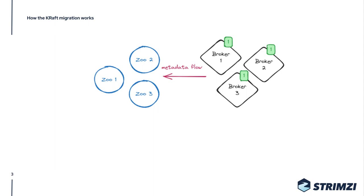This arrow shows that the metadata flow goes from the brokers to ZooKeeper. When we create a topic using the Kafka CLI tool, all the data goes to ZooKeeper to be stored. There is also flow from ZooKeeper to broker, but that is more an internal detail — for example, when there is a broker failover and a controller has to restart, it reloads the metadata from ZooKeeper. Our focus here is on where topics, ACLs, and quotas are stored, which is going from broker to ZooKeeper.